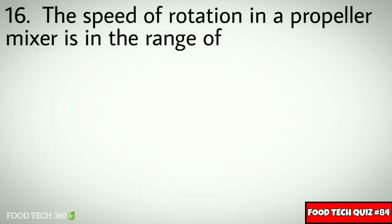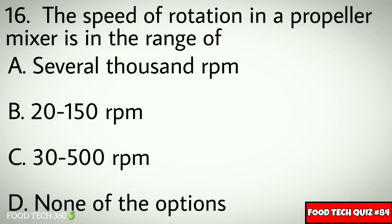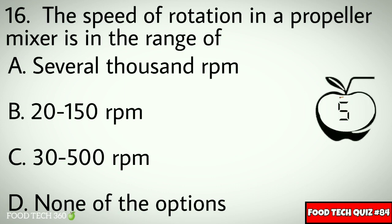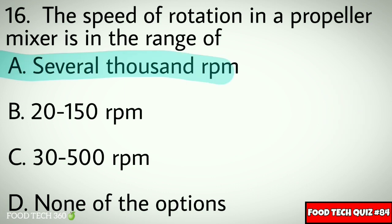Question number 16: The speed of rotation in a propeller mixer is in the range of — Options: A. Several thousand RPM, B. 20 to 150 RPM, C. 30 to 500 RPM, D. None of the options. Correct answer: A. Several thousand RPM.